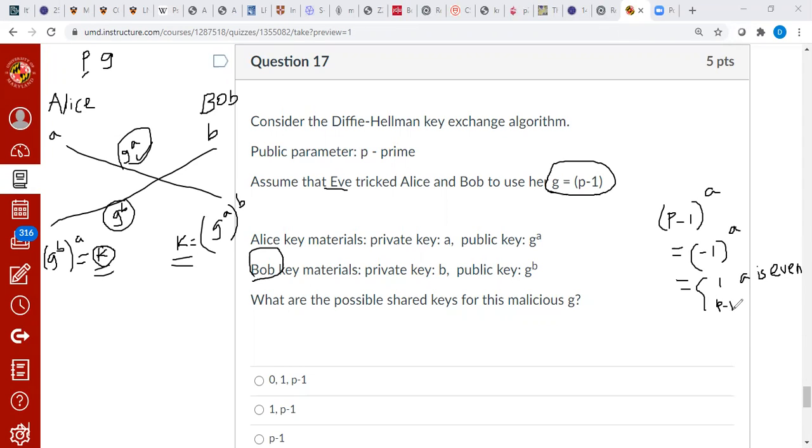So if G is backdoored by Eve, the only possible values you can have for K is either minus one or one, which means either one or P minus one. That's all. You cannot get zero.